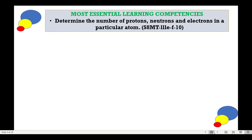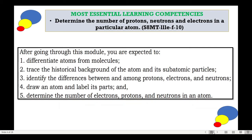For our most essential learning competency, we have to determine the number of protons, neutrons, and electrons in a particular atom. These are the following objectives: 1. Differentiate atoms from molecules. 2. Trace the historical background of the atom and its subatomic particles. 3. Identify the differences between and among protons, electrons, and neutrons. 4. Draw an atom and label its parts. 5. Determine the number of electrons, protons, and neutrons in an atom.